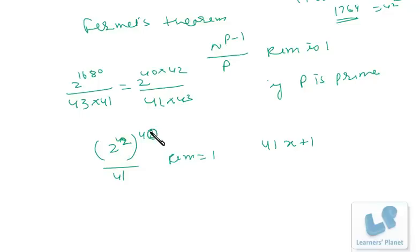After that, if I interchange, it's 2 raised to 42 raised to 40, and here it is 43. So 2 raised to 42 if divided by 43, the remainder will be 1 with the same logic, because 43 is once again a prime number.